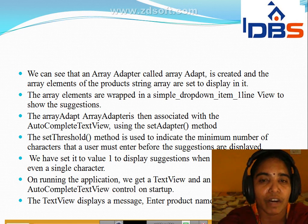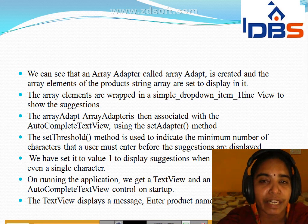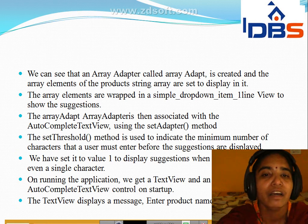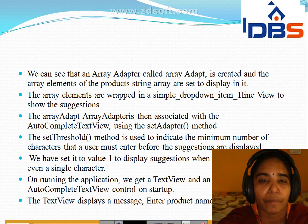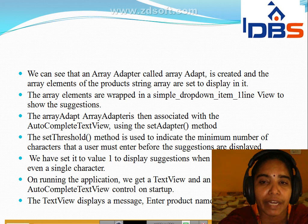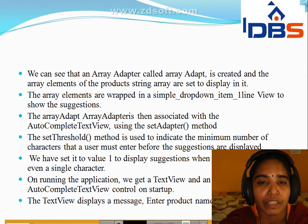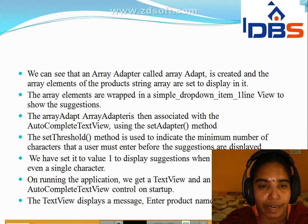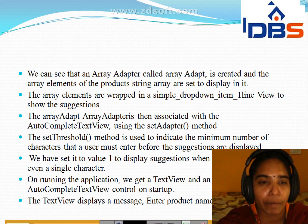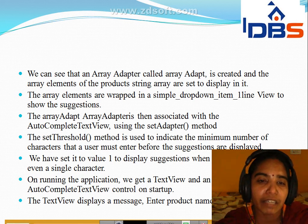We can see that the array adapter is created and the array elements of the products string array are set to display. The array adapter is created for the array elements of the products — laptop, handycam, cell phone. The array elements are wrapped in the simple dropdown item. The set threshold method is used to indicate the minimum number of characters that must be entered before the set threshold method is invoked.